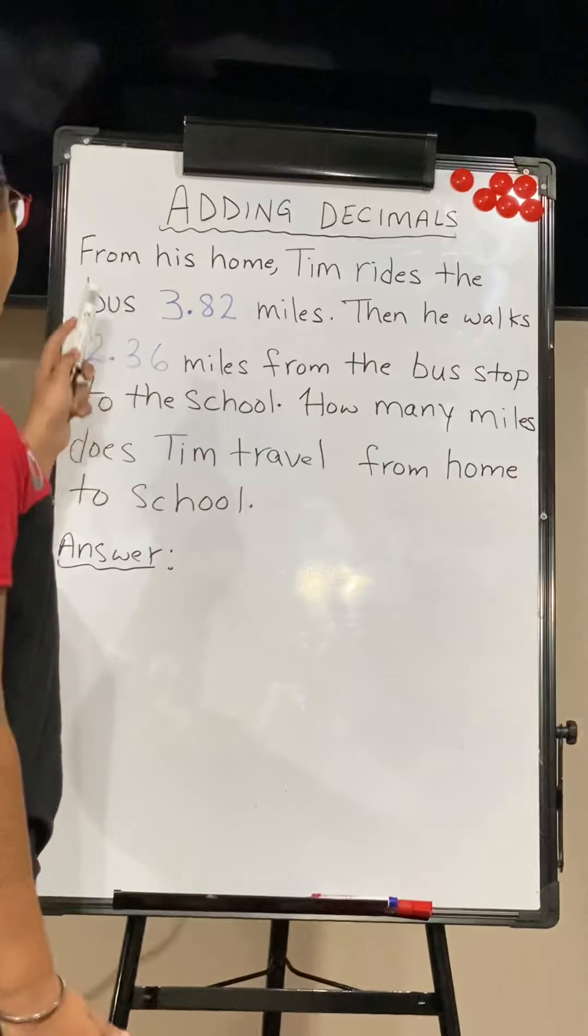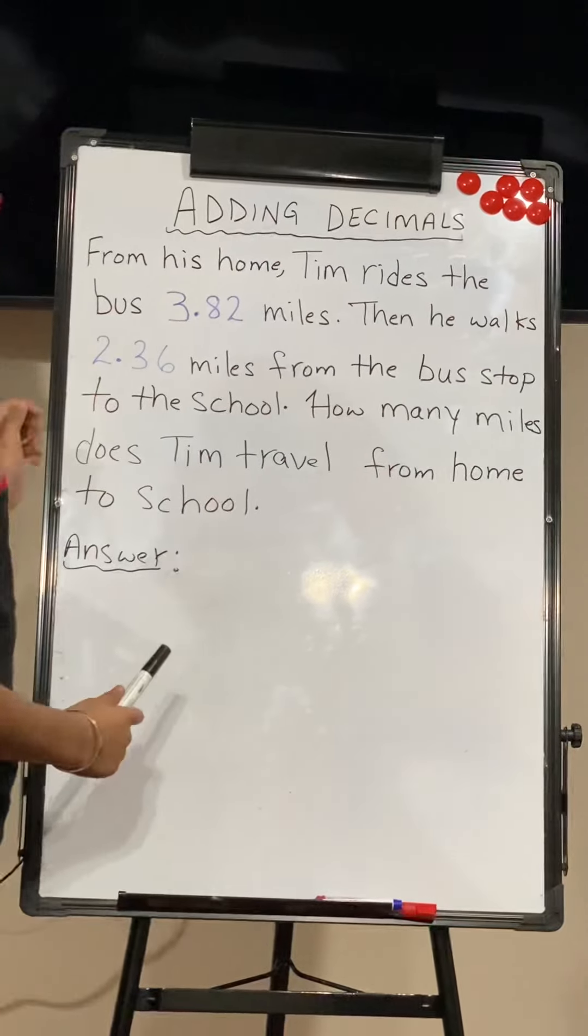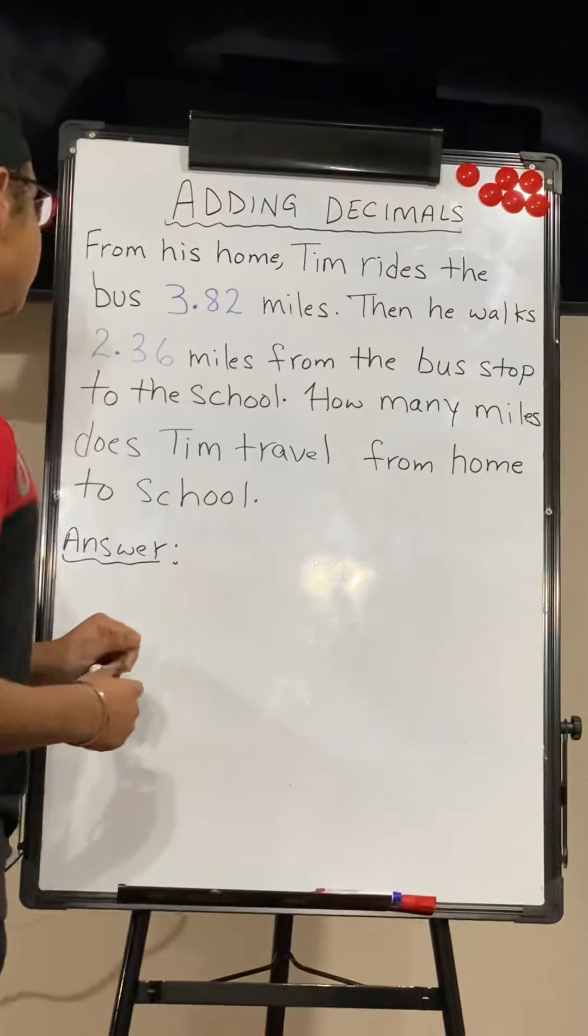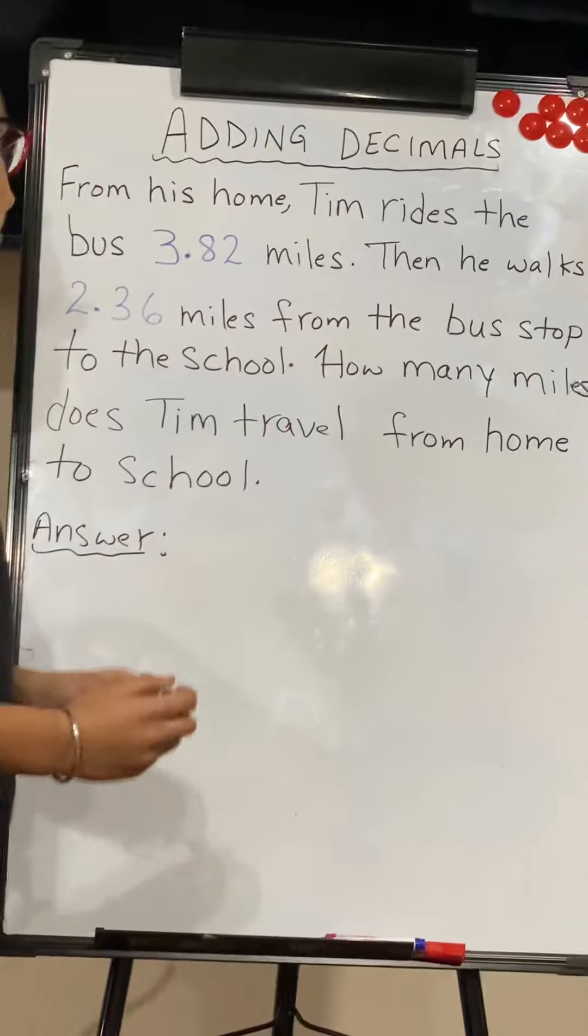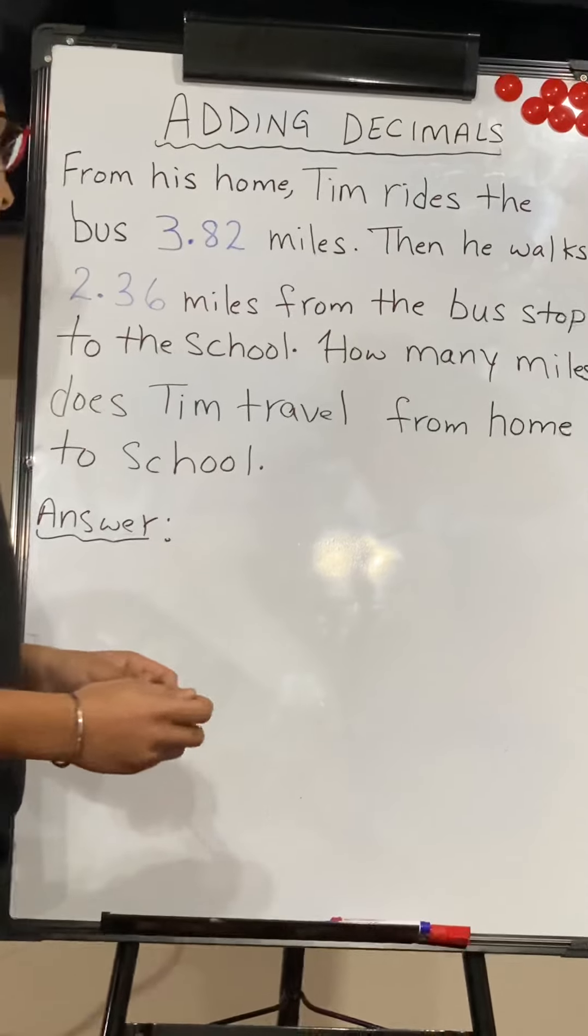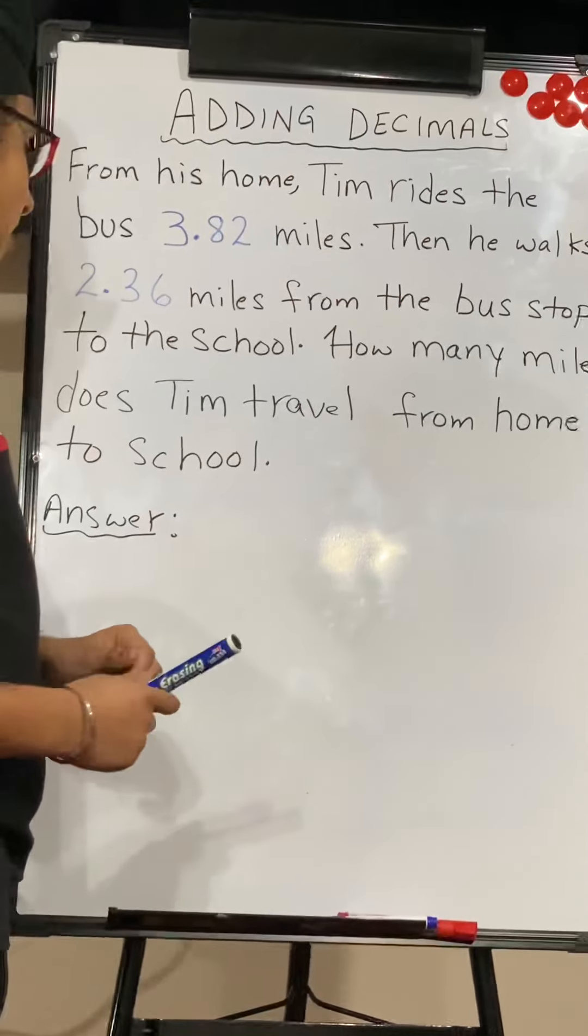Here's my word problem about adding decimals. The word problem is, from his home, Tim rides the bus 3.82 miles. Then he walks 2.36 miles from the bus stop to the school. How many miles does Tim travel from home to school?